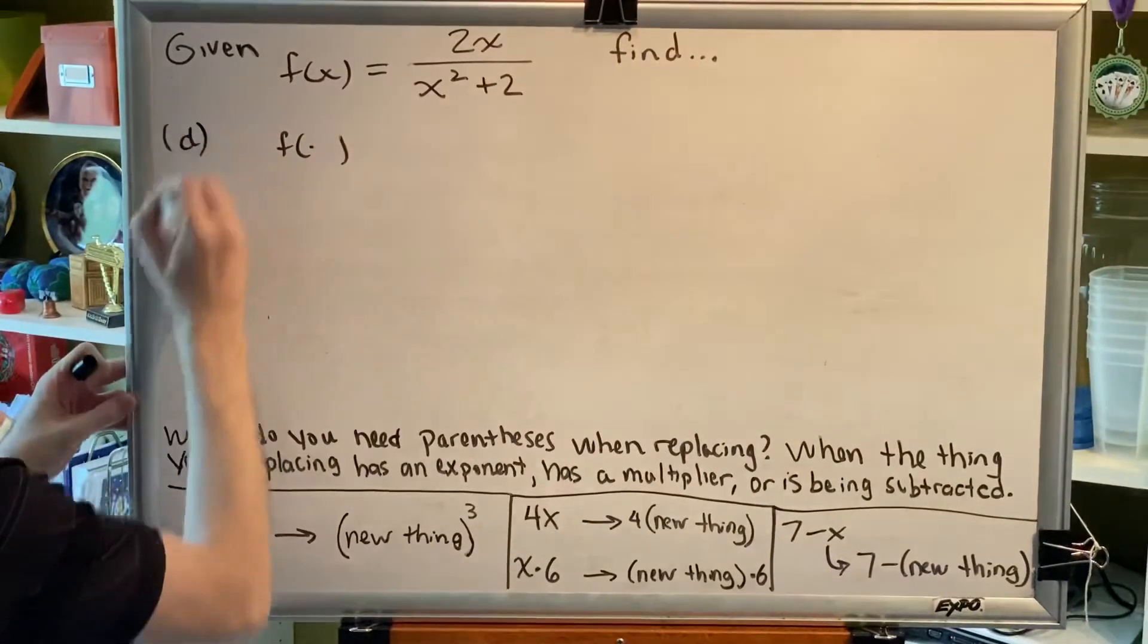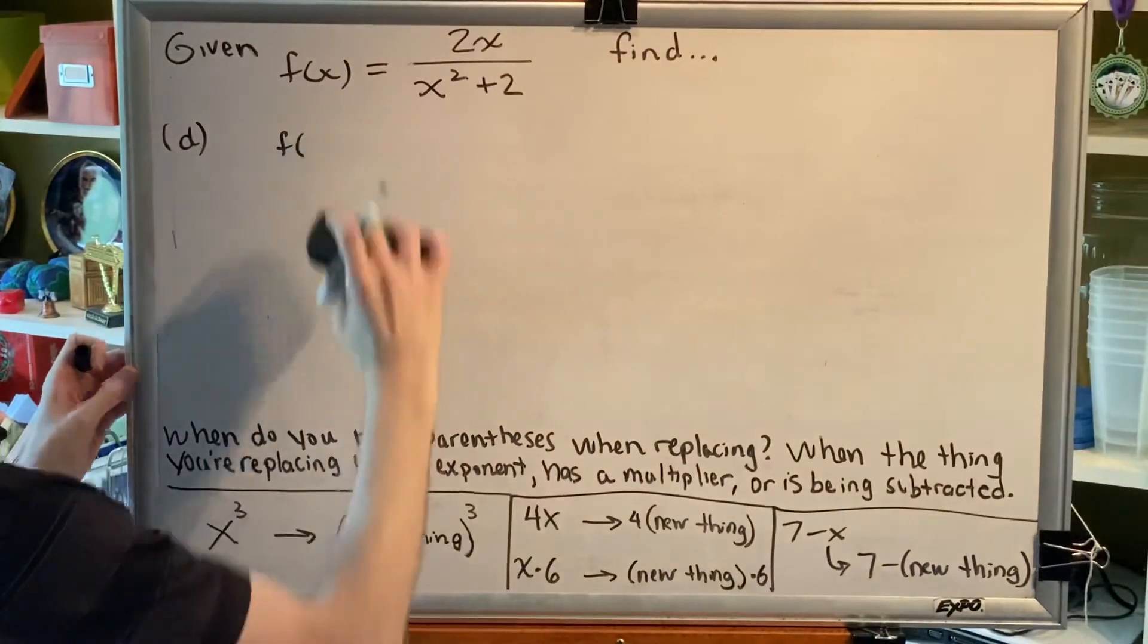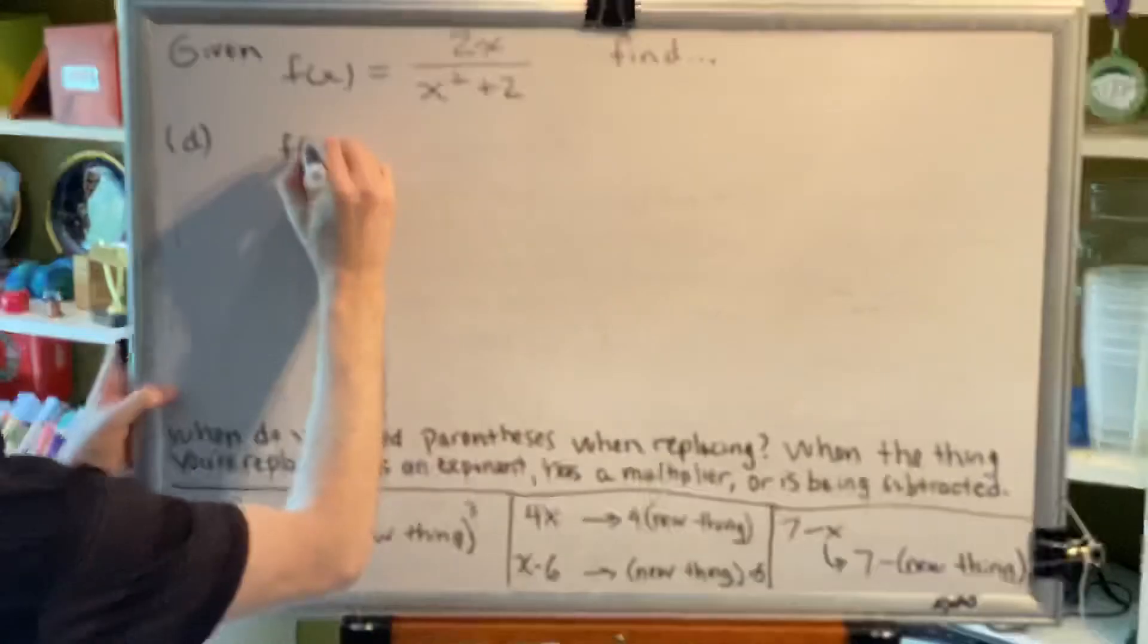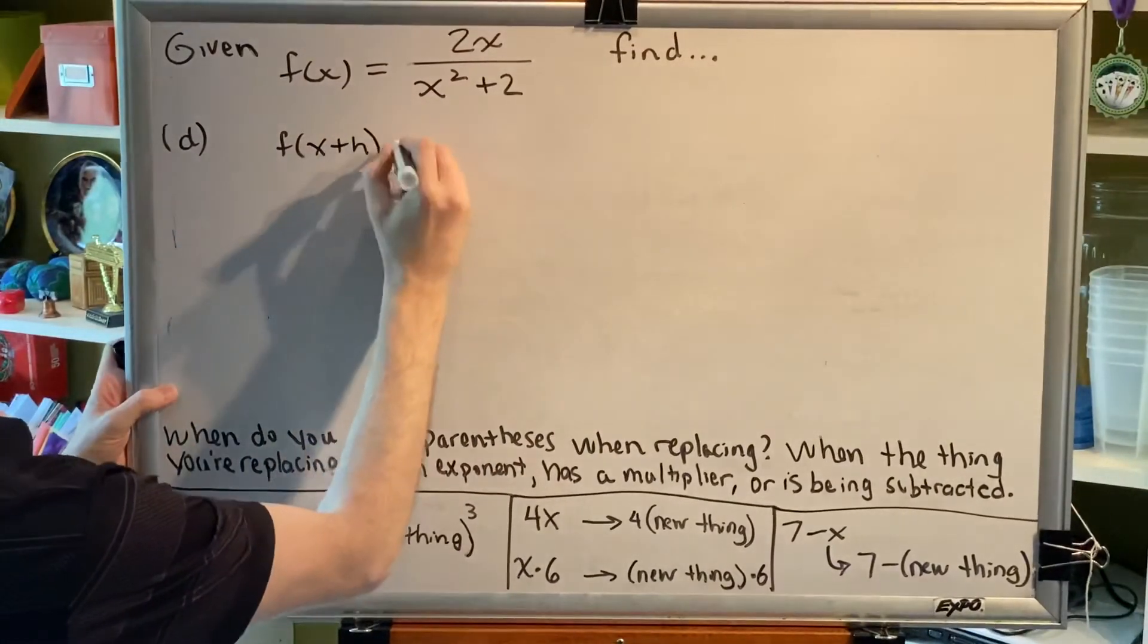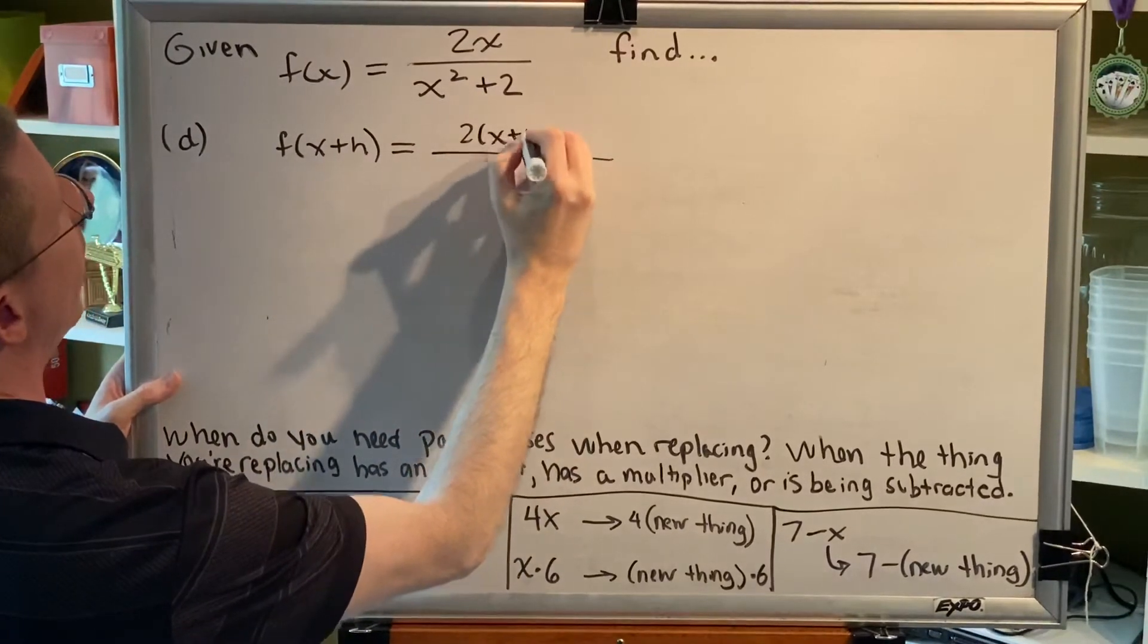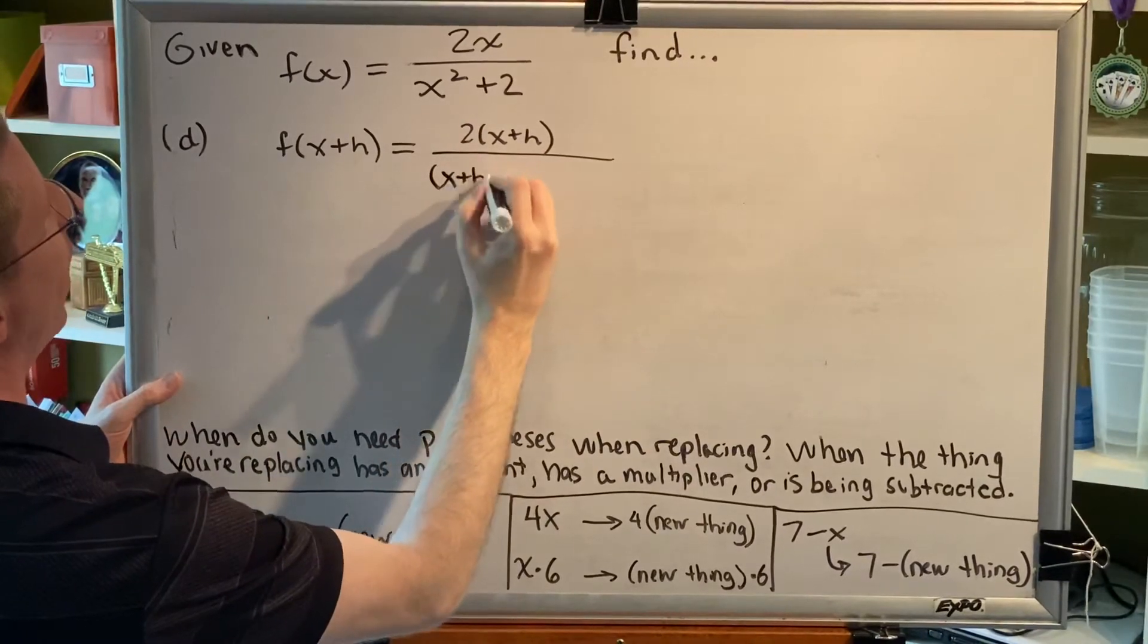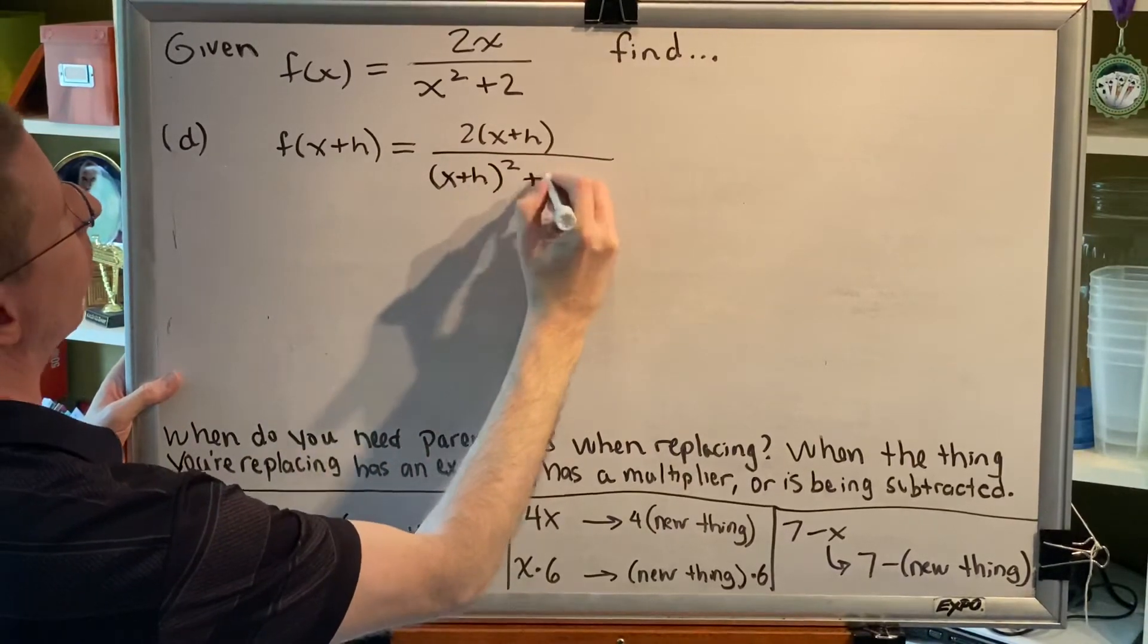Part d says to find f of the sum x plus h. So we have 2 parenthesis x plus h close parenthesis, over parenthesis x plus h close parenthesis squared, plus 2.